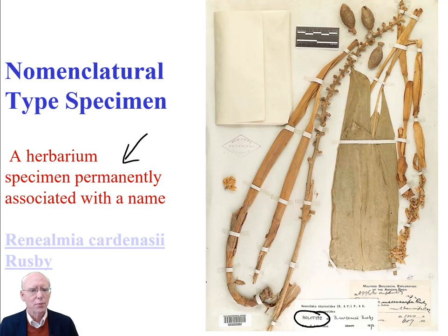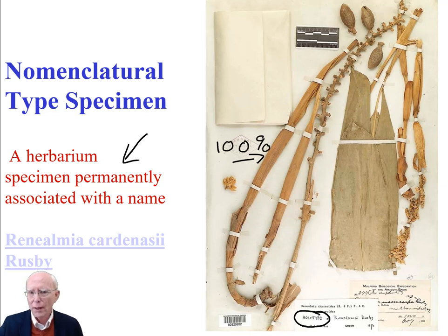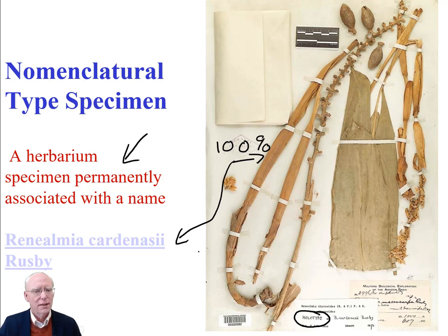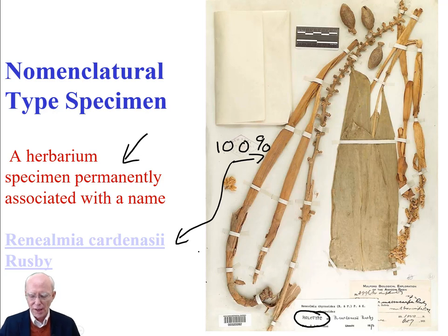That the name is permanently associated with a specimen means we know 100% that this dried plant — glued to a piece of paper in a herbarium cabinet somewhere in the world — is this species. In this case, it's Rheniomia cardandaceae. Every other plant we have called Rheniomia cardandaceae has been identified by comparison with this plant — comparison of DNA, morphology, or some other attribute. That's why types are so important: they are the repository for the names. All botanical nomenclature is based on this concept of the type specimen.